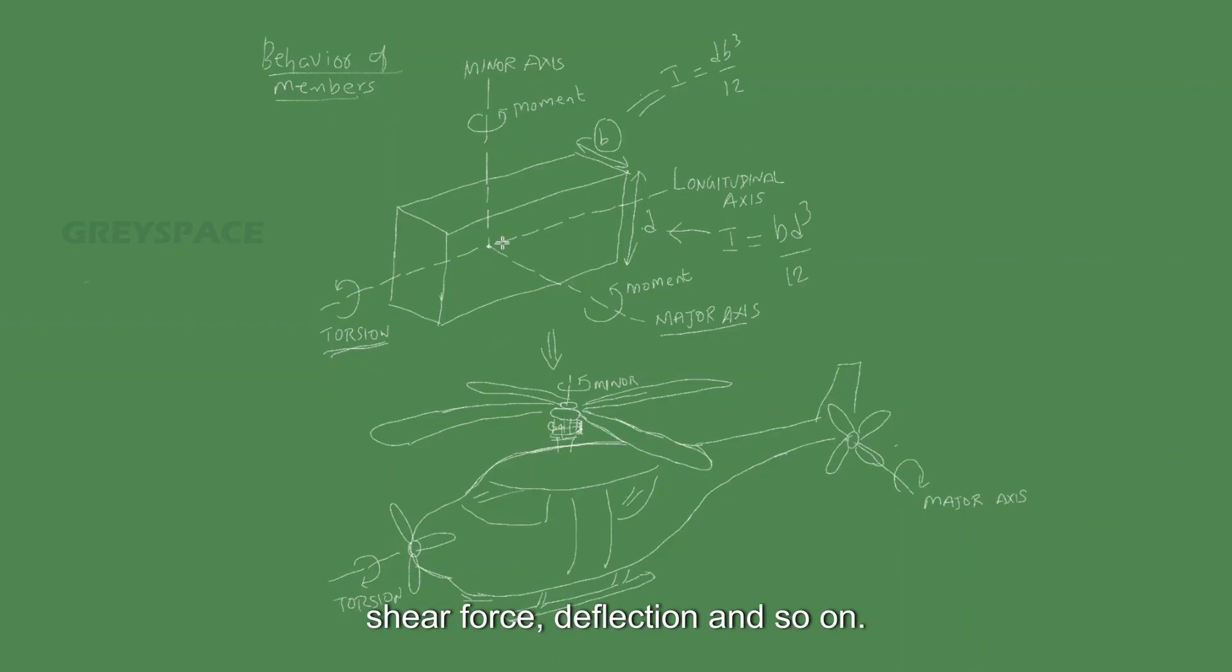force, deflection, and so on. Bending moment happens about an axis. Shear forces or axial forces happen along the axis. Let's talk about bending moment one by one axis. Let's look at first major axis.